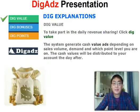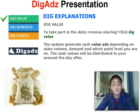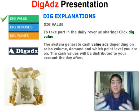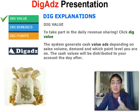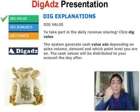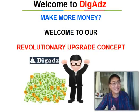For Dig Value ads, if you want to take part in daily revenue sharing, you click Dig Value for cash value. The system generates cash value ads depending on sales volume, demand, and which point level you are on. Cash values are distributed to your account the day after. This is what makes Dig Ads different from other programs — for one dollar you can earn $1.50.